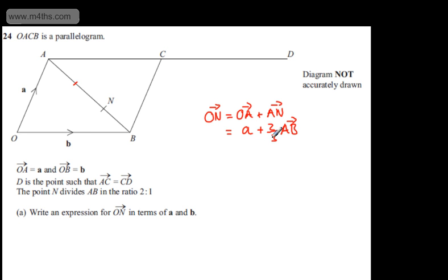Now the vector AB is simply b minus a. So I'm going to have a plus two thirds of b minus a. If I expand the brackets, we're going to have a plus two thirds b minus two thirds a. And I can write this now as one third a plus two thirds b. So that's now in its simplest form.